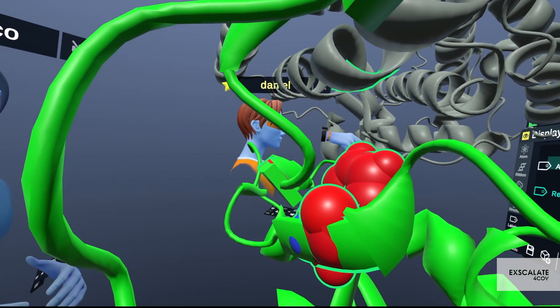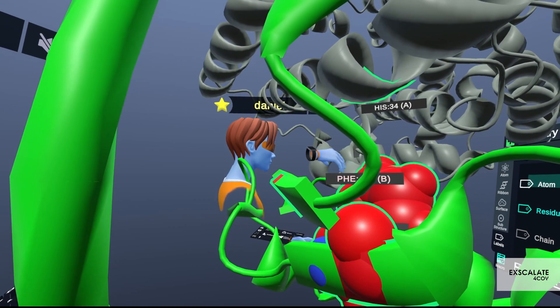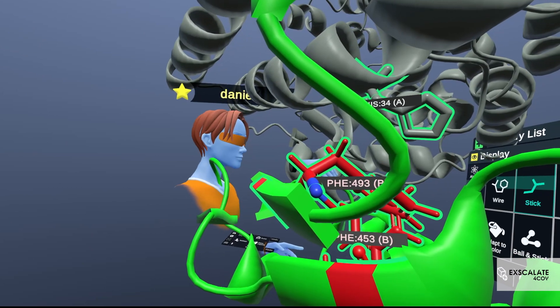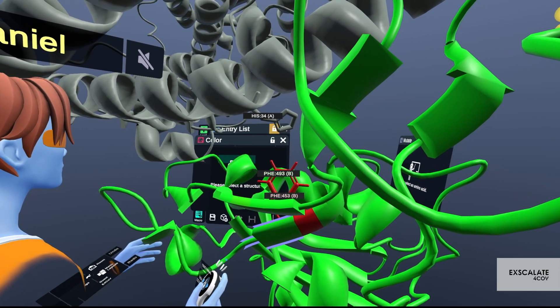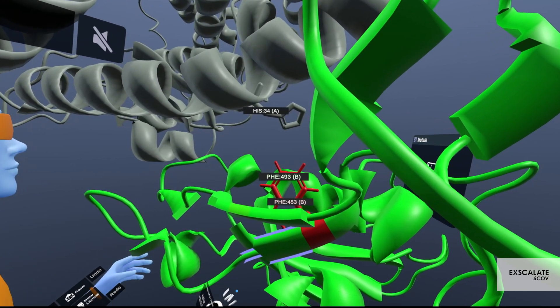I'm just going to display it with the sticker representation right now. We'll also enable and show the sticks there you go. Yeah so this is the main structural feature that's happening with this mutation in mink.